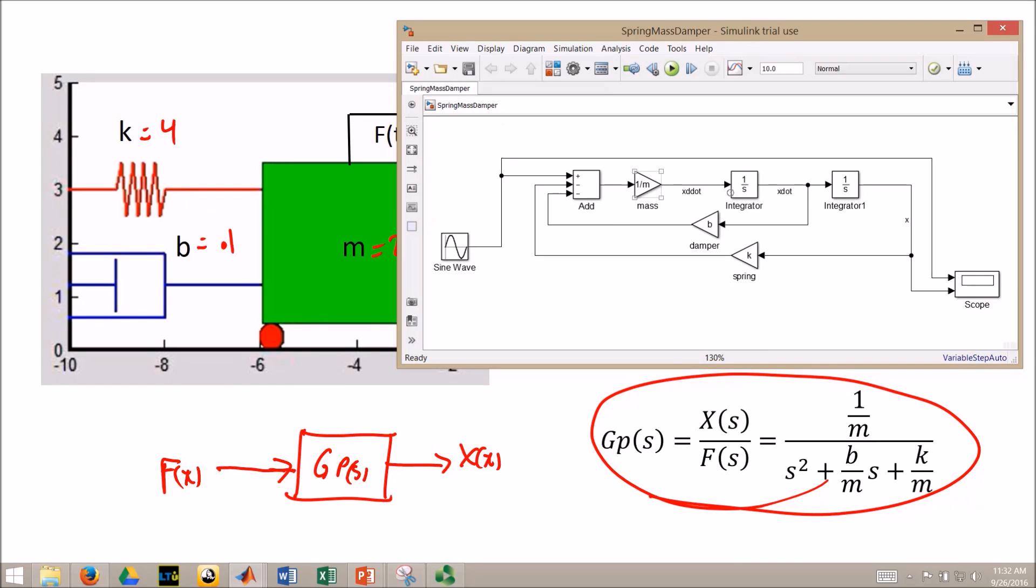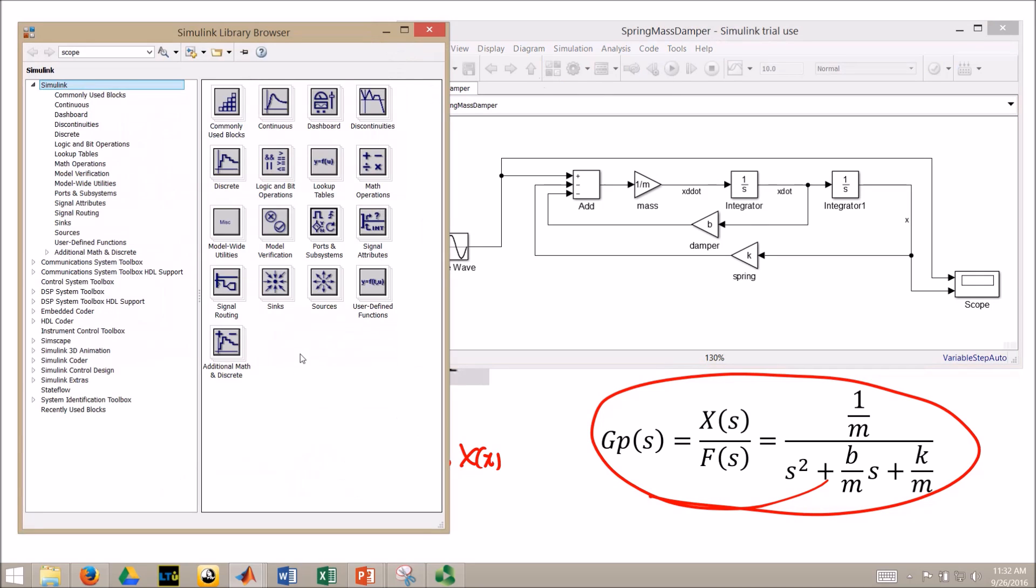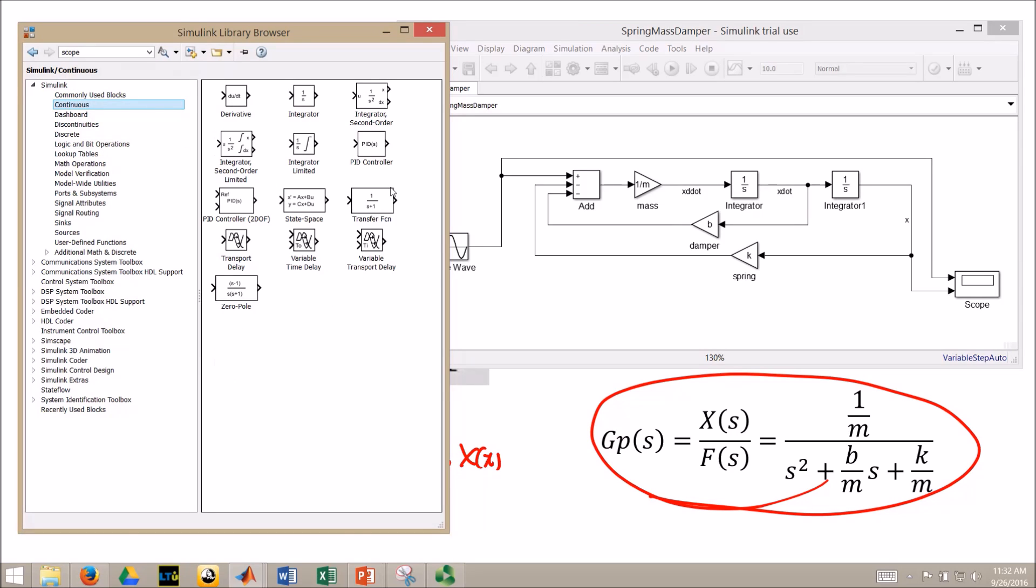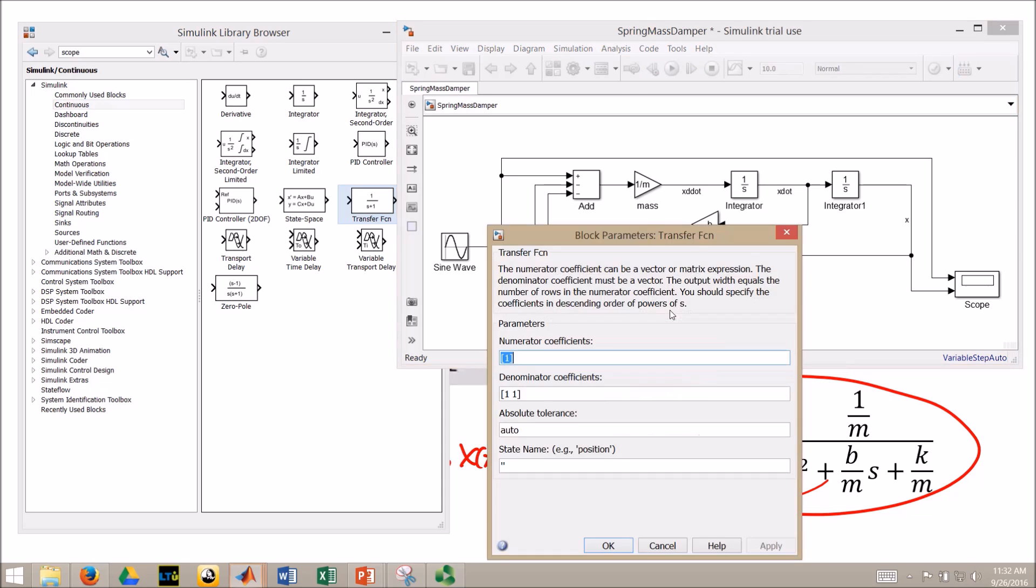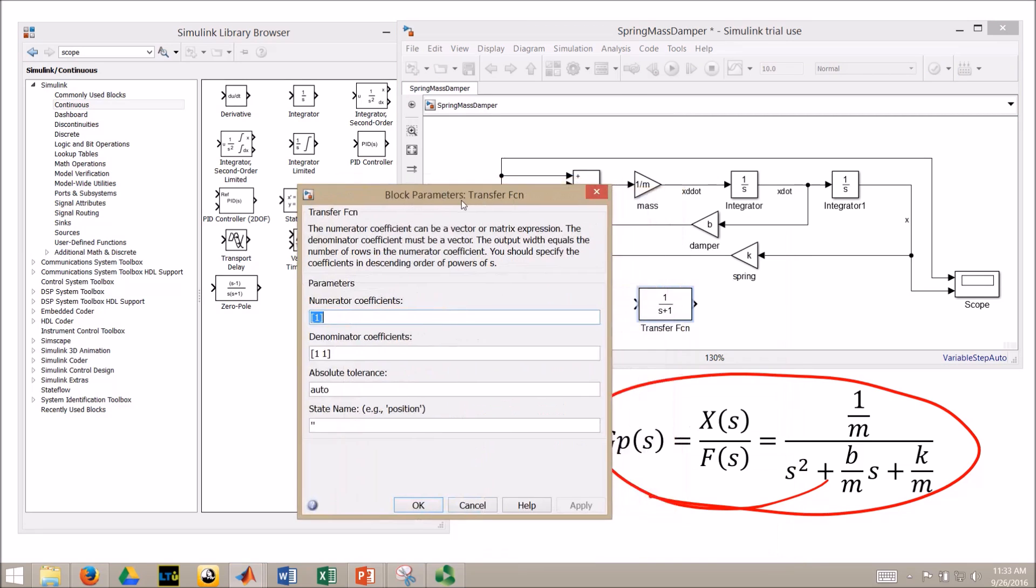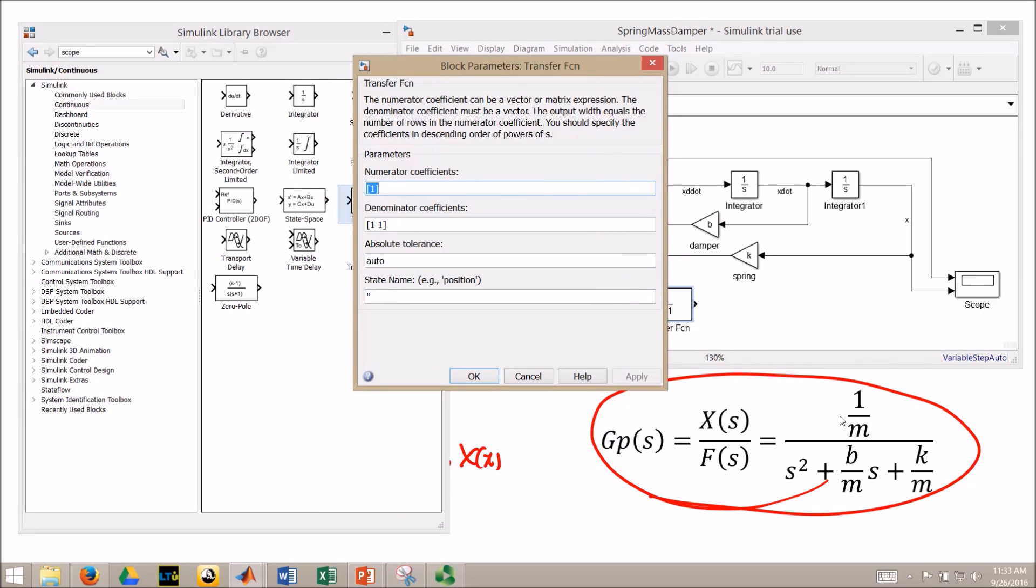Model with the primitive implementation. Let's open up our library browser. I'm going to go to continuous, and I'm going to pull in the transfer function block. And I will double-click on that, and I need a numerator and denominator. Let me move this over here. And you can see my numerator is 1 over m on my slide there. And my denominator in descending powers of s.